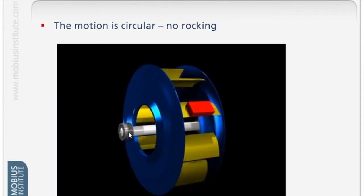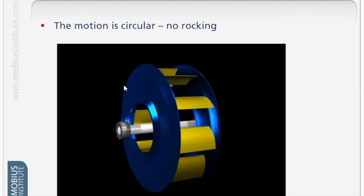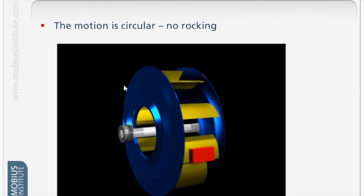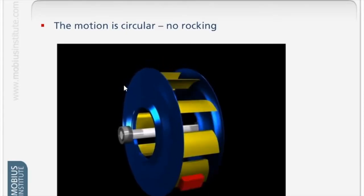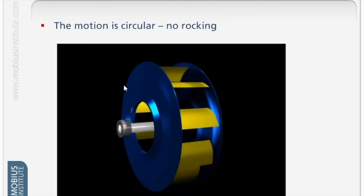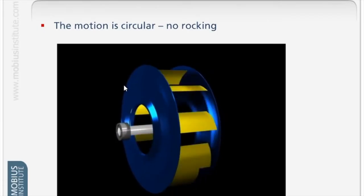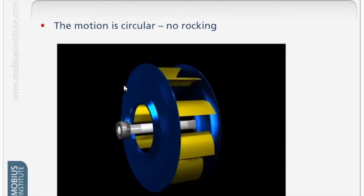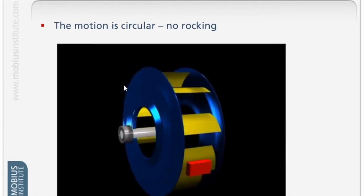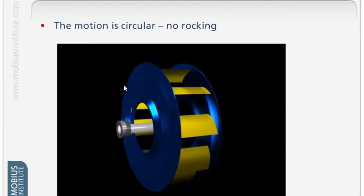But you might think, well wouldn't it always do that? No. With other fault conditions, misalignment for example, just about all of them, it doesn't move in a circular motion. It's very elliptical. It moves in funny ways you wouldn't expect. That's what phase tells you - how it's moving.